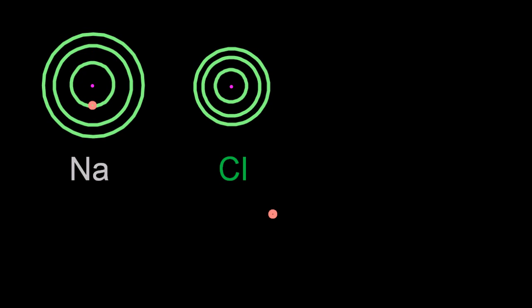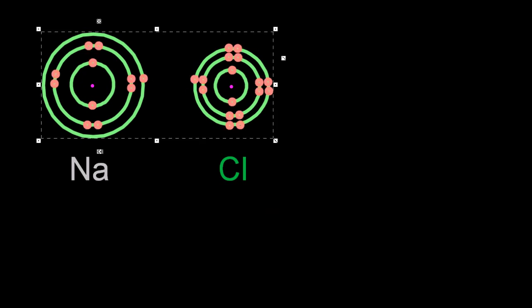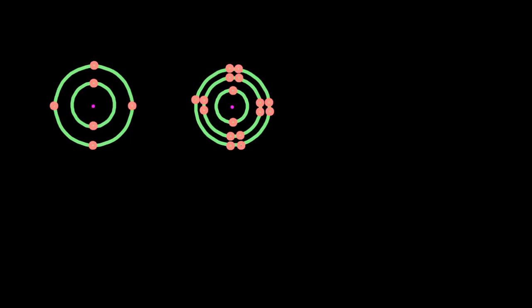Describe how ions can be formed as a result of electron transfer. Well, let me first of all draw a sodium atom and a chlorine atom.